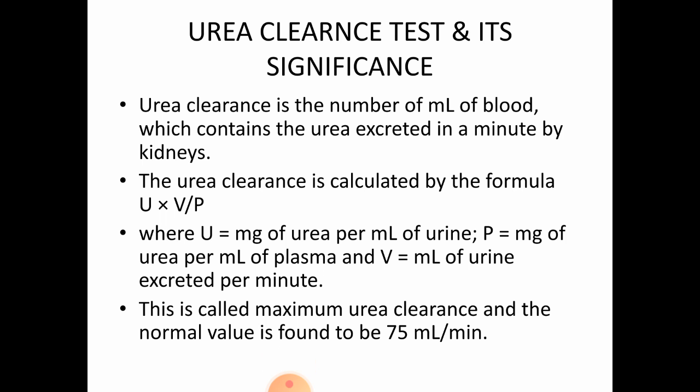It is calculated by the formula U × V / P, where U is the milligrams of urea per ml of urine, P is the milligrams of urea per ml of plasma, and V is the ml of urine excreted per minute. This is called maximum urea clearance, and the normal value is around 75 ml per minute.